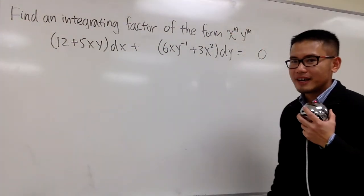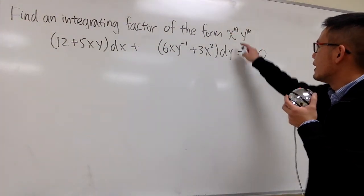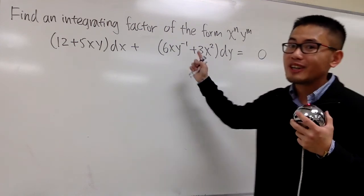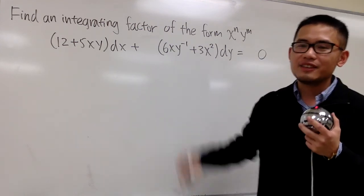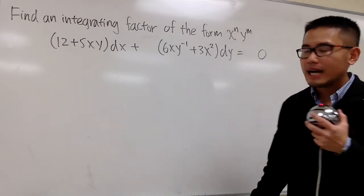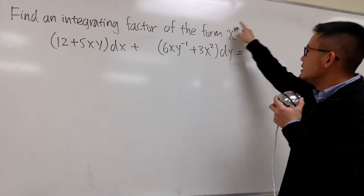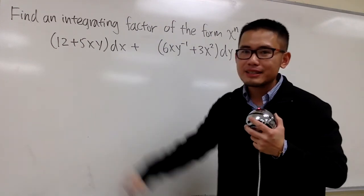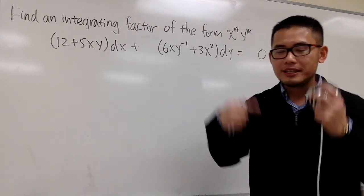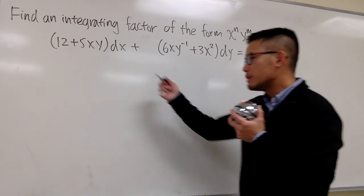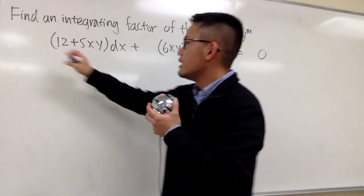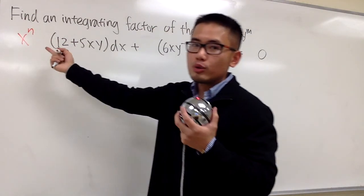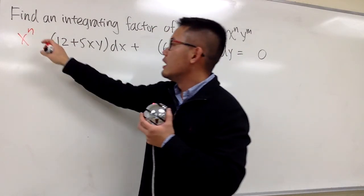We are going to find an integrating factor in the form of x to some power times y to some power for this almost exact differential equation. So we know that if this is the integrating factor, once we multiply everything by that, the result will be exact.